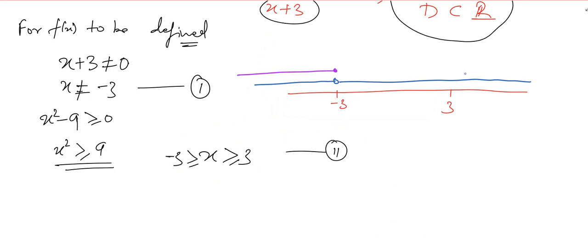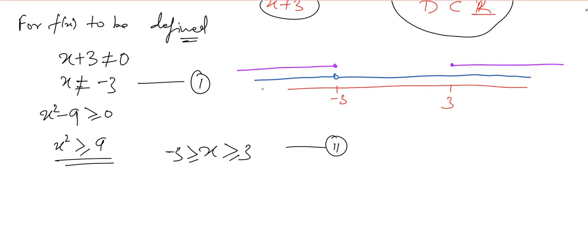The next constraint says that x has to be less than or equal to minus 3 and greater than or equal to 3. We need to take the intersection of both these cases. It would be nothing but all these things are included in our domain, but we won't include minus 3 because it's obeying only one condition.